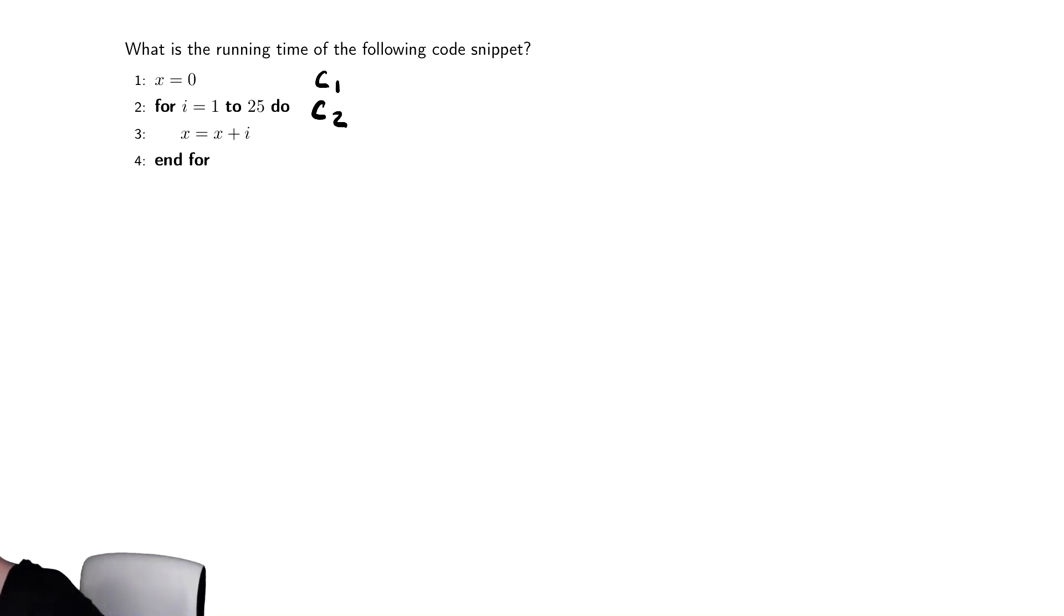Similarly for line three it is embedded inside of a for loop. It has some fixed amount of time that it takes to do the retrieval of X, the retrieval of I, the addition of X and I, and the assignment of X plus I back to X. All of that takes some amount of time. But it is a constant amount of time each iteration. It is the same operations every time.